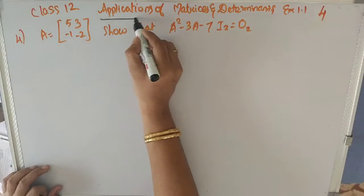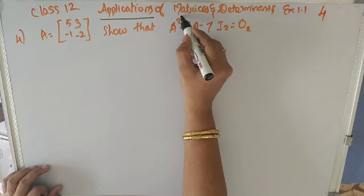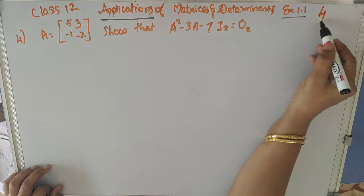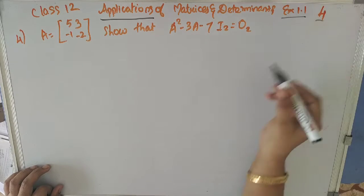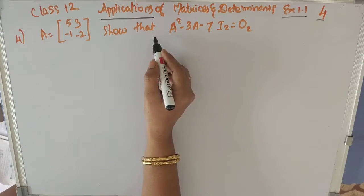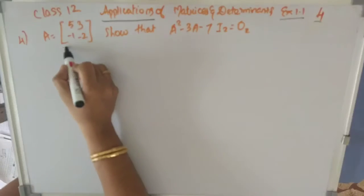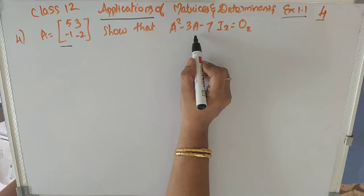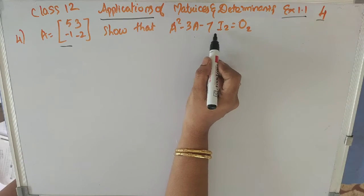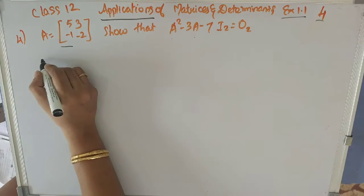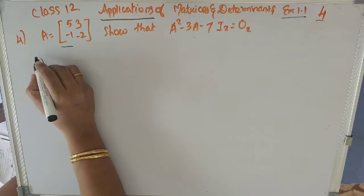Hi everyone, today we are going to see applications of matrices and determinants, exercise 1.1 problem 4. Here a 2×2 matrix is given and it is A. We have to show that A² minus 3A minus 7I₂ equals O₂.